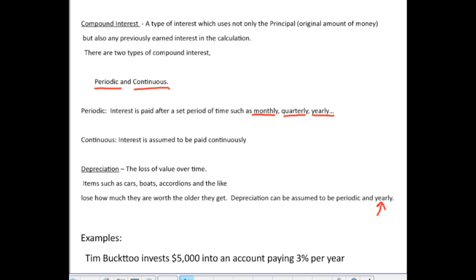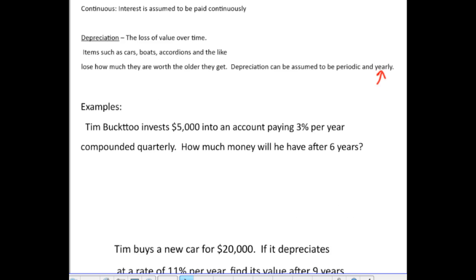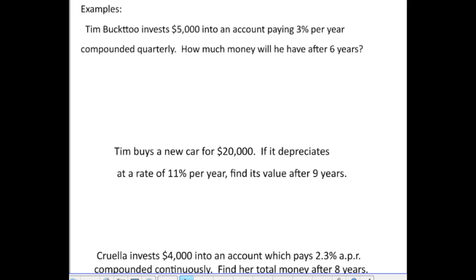Now, let's take a look at how we can use these formulas in some word problems. Take a look at this first one. Tim Bucktoo invests $5,000 into an account paying 3% per year, compounded quarterly. How much money will he have after six years? Well, in this problem, the important part is that it's compounded quarterly. Because, again, I've got two formulas that I've talked about, the periodic formula and the continuous. Unless it says continuous, you never use the continuous formula. In this case, since it's compounded quarterly, that's periodic, so I write the periodic formula. A equals P parentheses 1 plus R over N to the N T power.